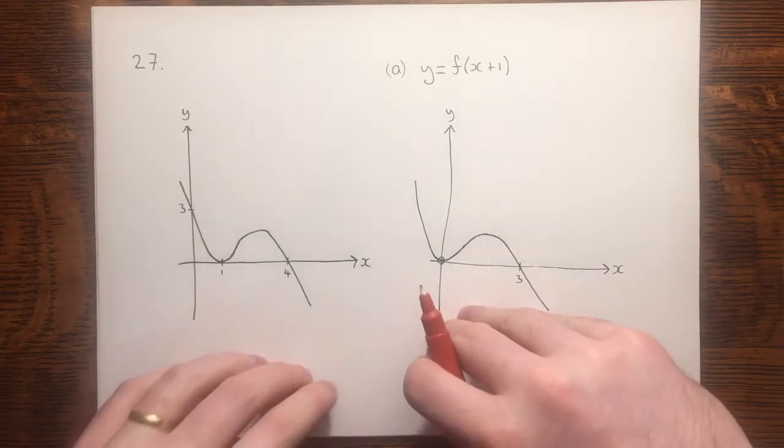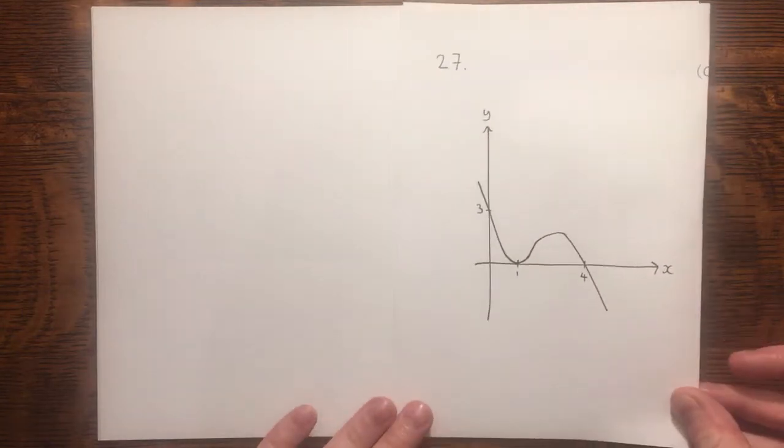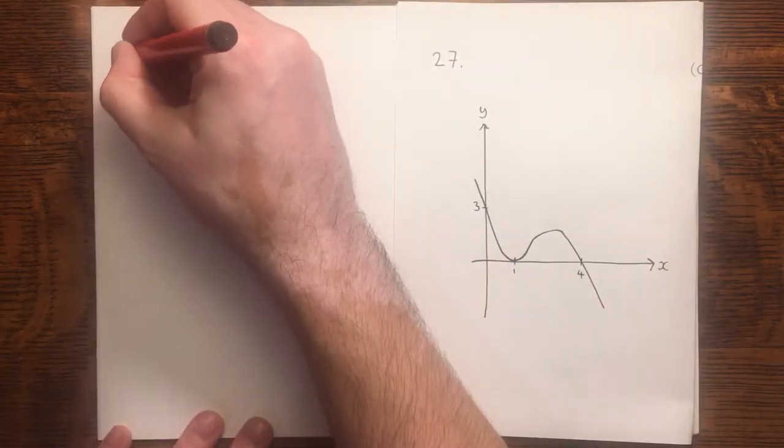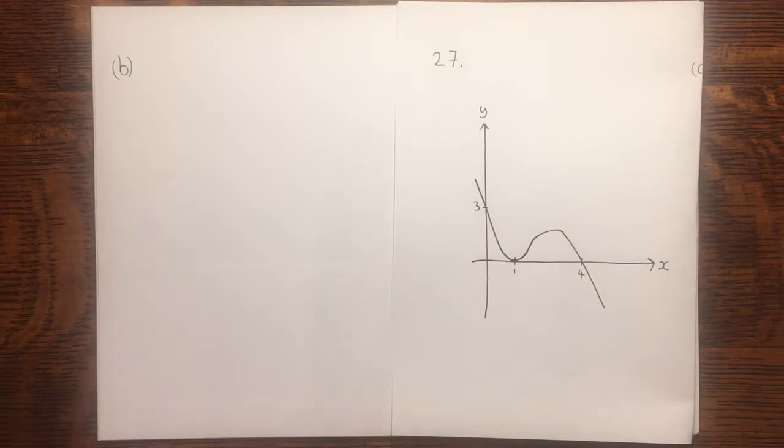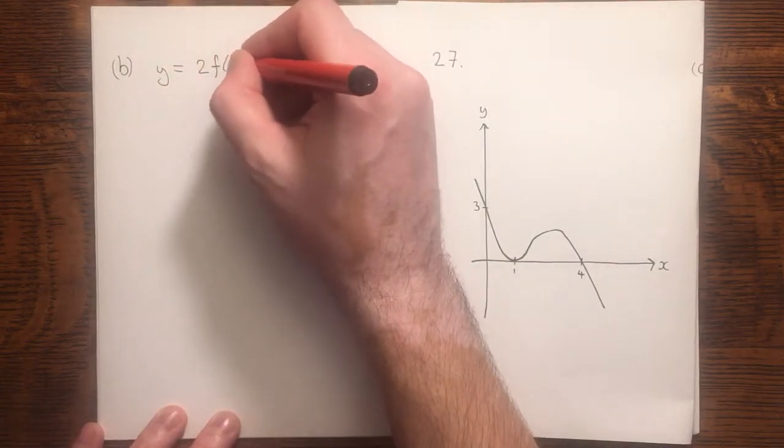In part b, we are given another transformation to do, and that is y equals 2 f of x.